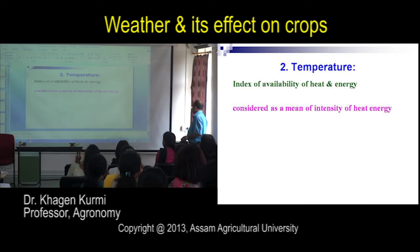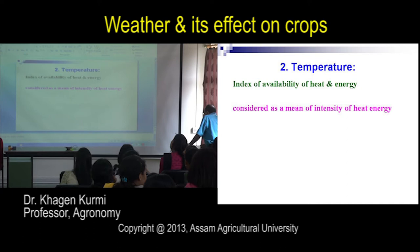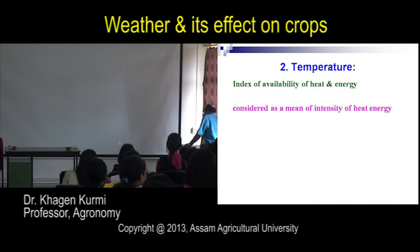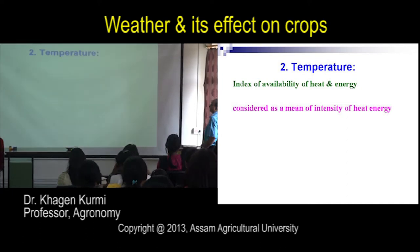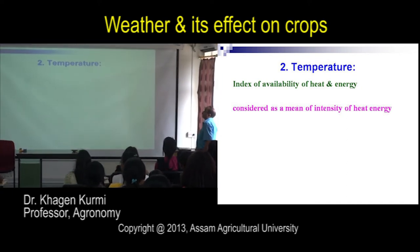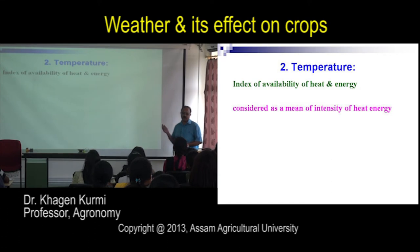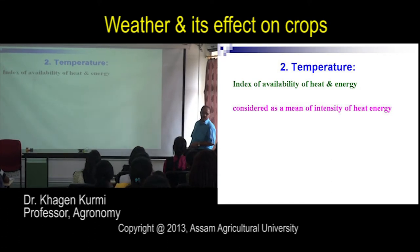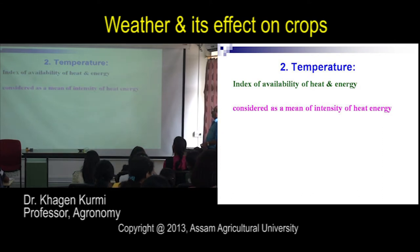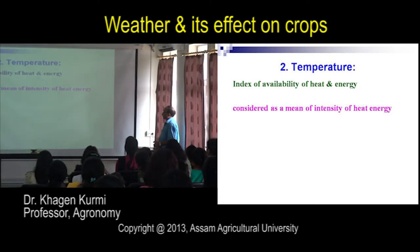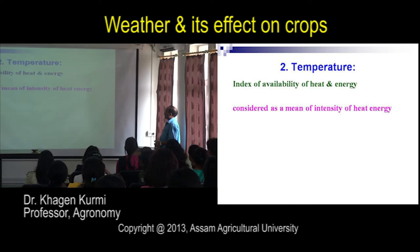Rainfall has been discussed previously. Today's topic is temperature — the factors affecting growth and yield. Temperature is the result of solar radiation energy, which is the thermal index or heat energy. It is generally considered as the main measure of heat energy intensity.